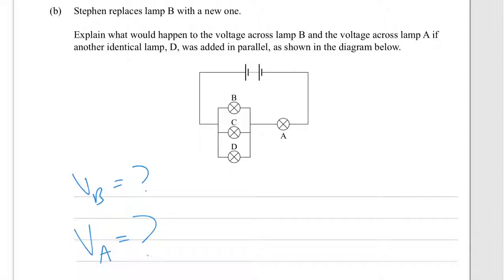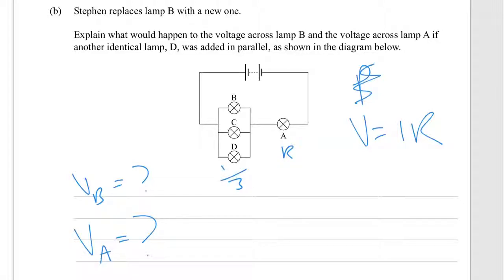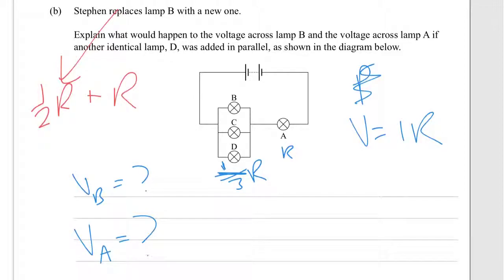If another identical lamp is added in parallel, we work with resistance using V equals I times R. With three lamps in the parallel branch, the resistance is approximately one-third R — not one over three R, but one-third R. So we've gone from half R plus R in the previous question to one-third R plus R now.